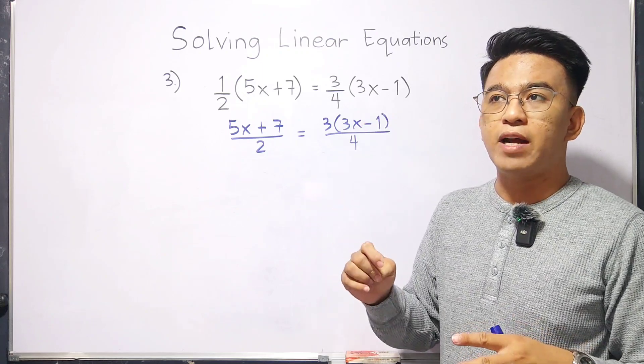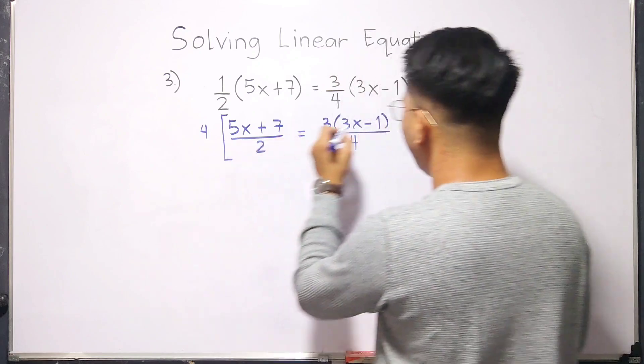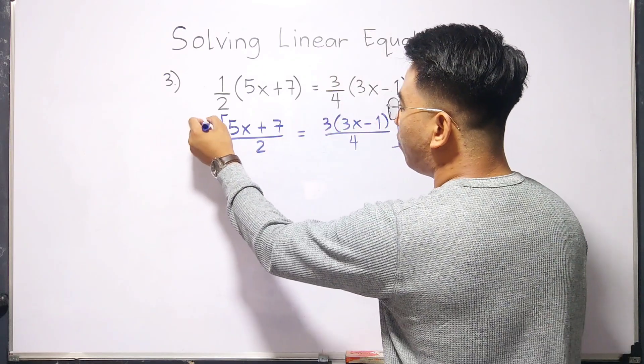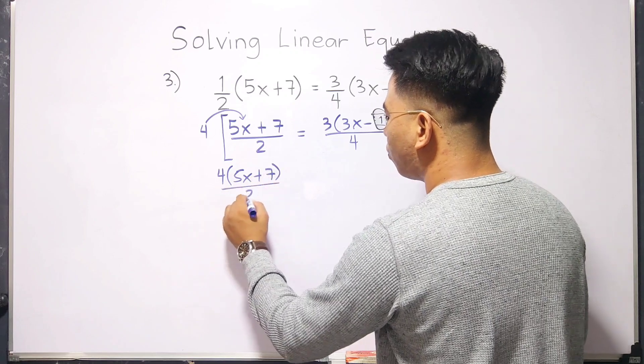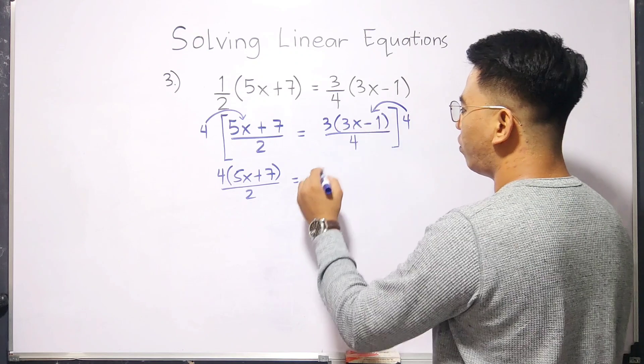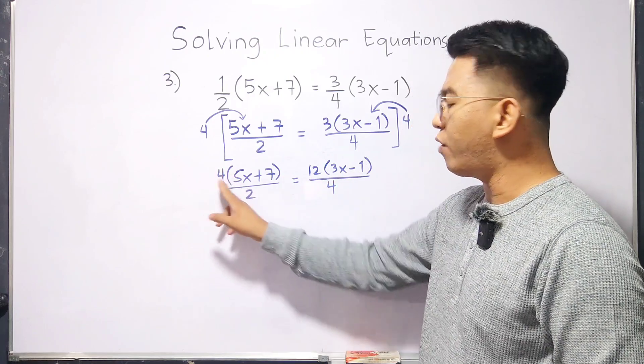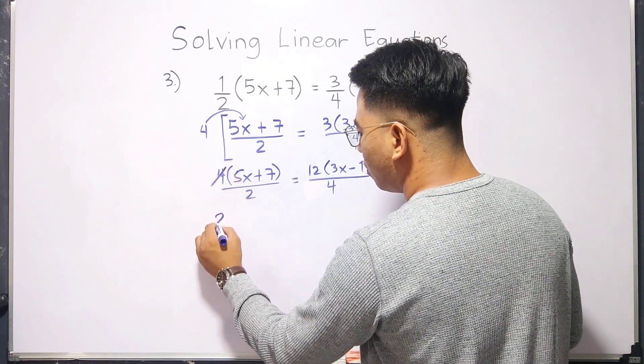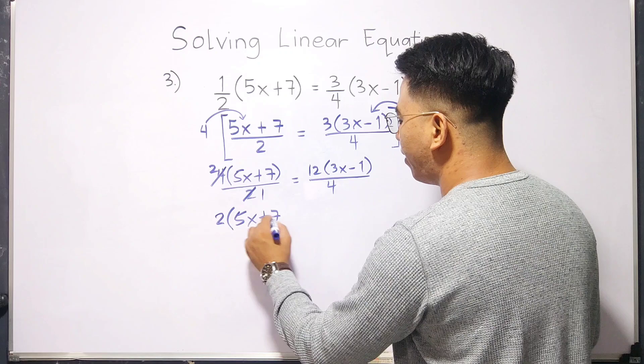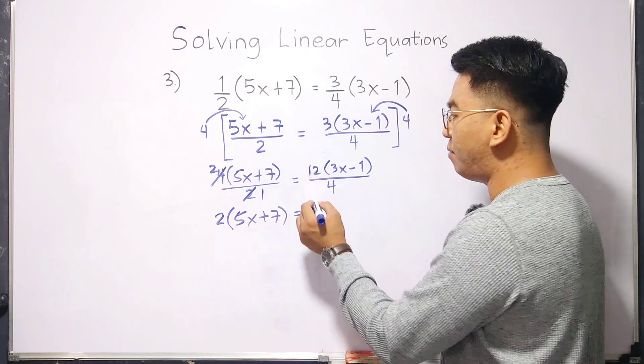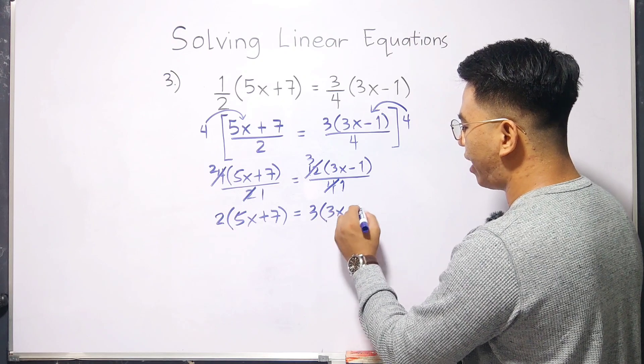Now, to eliminate this, we need to use the LCD. We will multiply the whole equation by 4. When we multiply this, it will become 4 times 5x plus 7 over 2 is equal to 12 times 3x minus 1 over 4. In this case, we can simplify 4 and 2. It will become 2 times 5x plus 7 is equal to 3 times 3x minus 1.